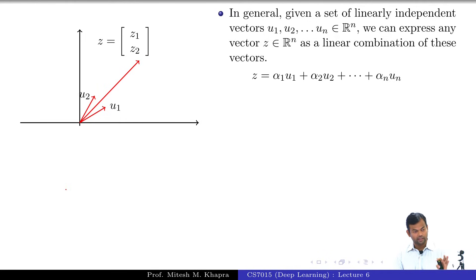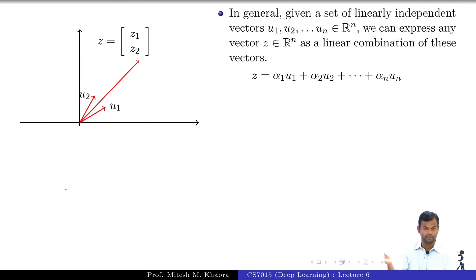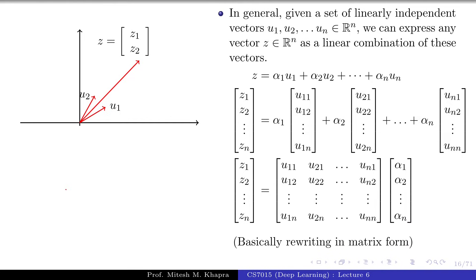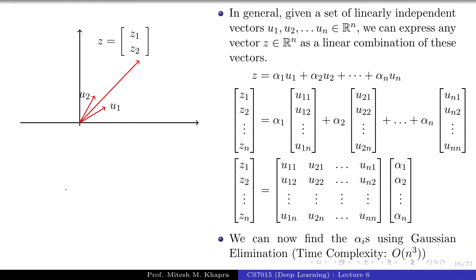Any vector in Rⁿ can be expressed using the vectors which form the basis of Rⁿ — that is why they are called basis vectors. Writing this in matrix notation gives a system of linear equations, which you can again solve using Gaussian elimination. The complexity of Gaussian elimination is O(n³), and I am not doing all this just for the sake of it — I have a point to make on the next slide.